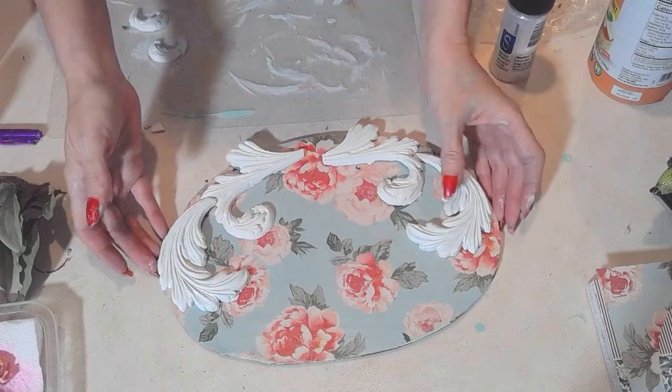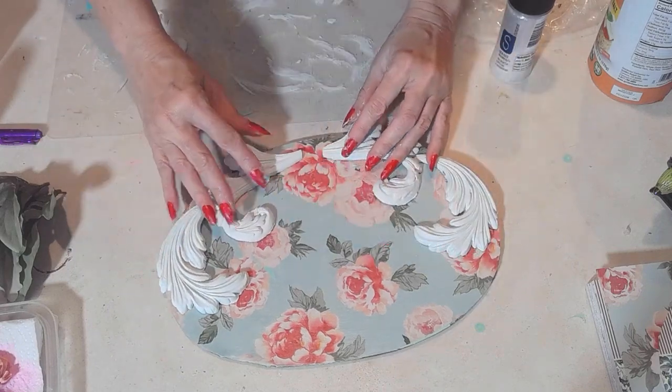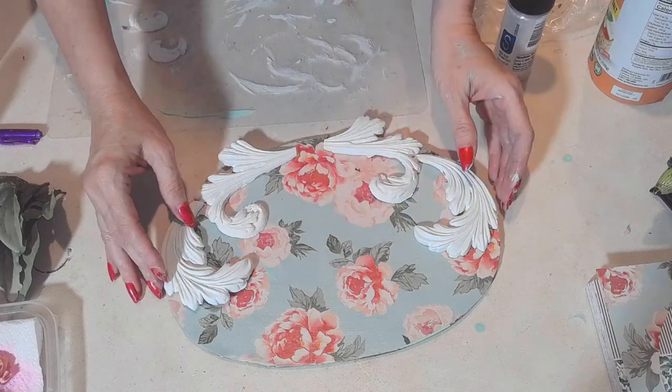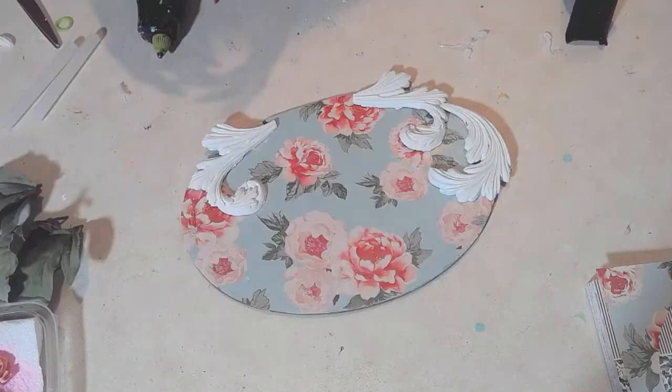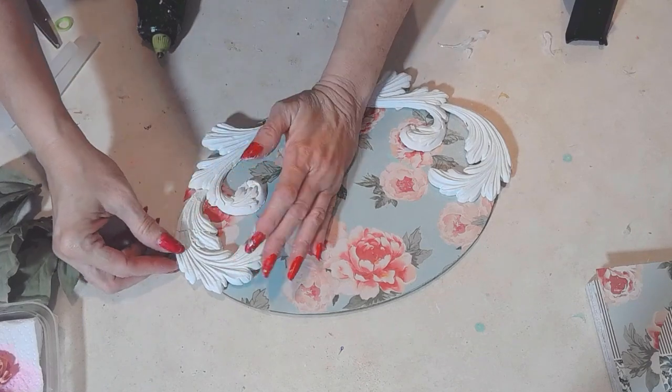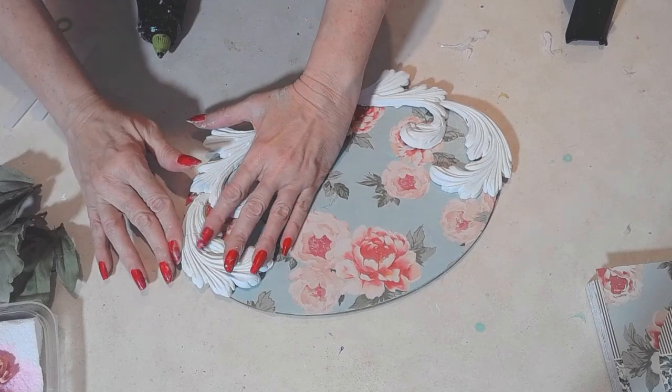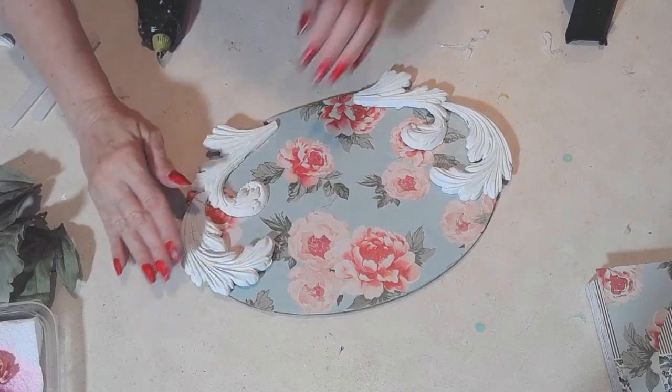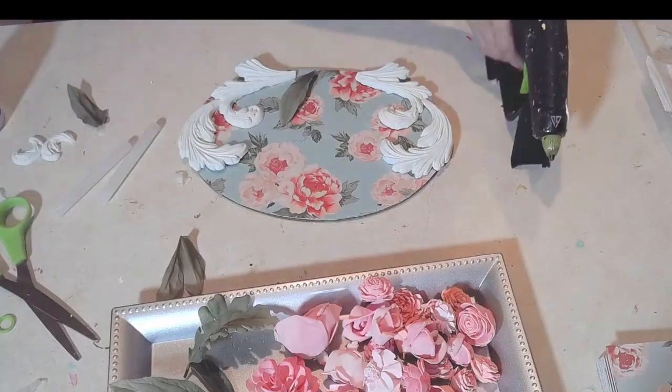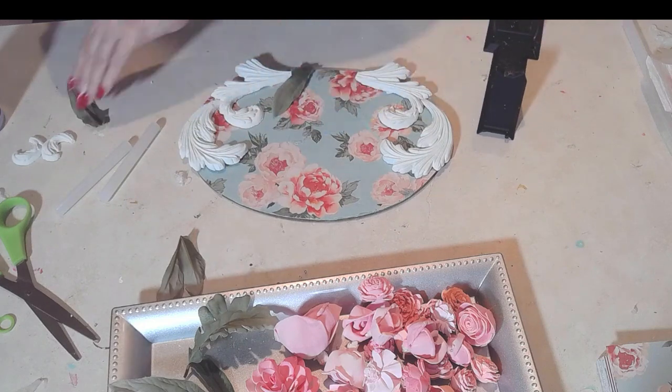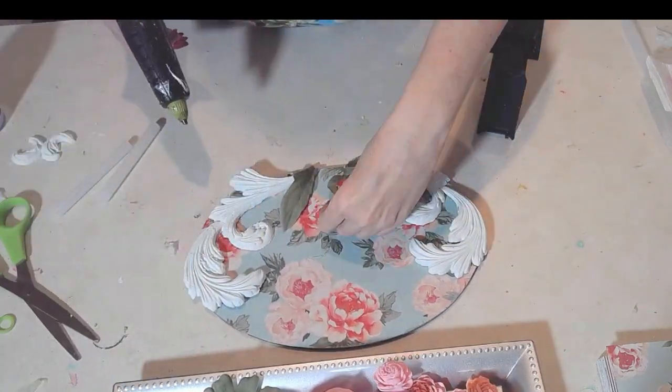So here I am Mod Podging, decoupaging. Now I'm using these air dry clay pieces. I didn't go through the whole process of showing you how I made them because I forgot. I just used some IOD clay molds and I used the Crayola air dry clay and I let them dry overnight. Look how beautiful it came out - it's just oh, I love it, so pretty.